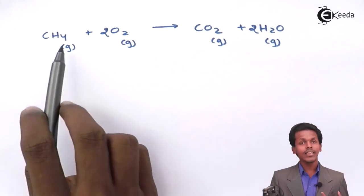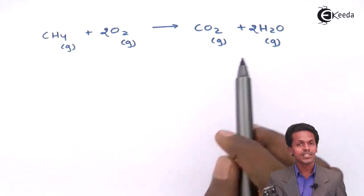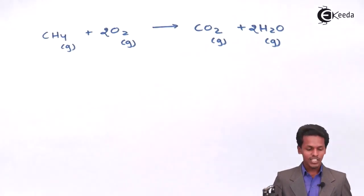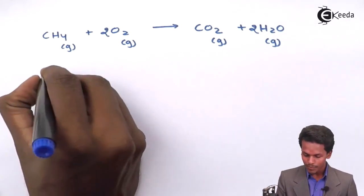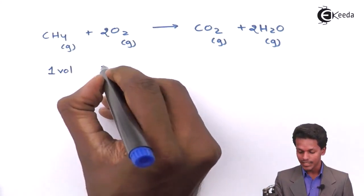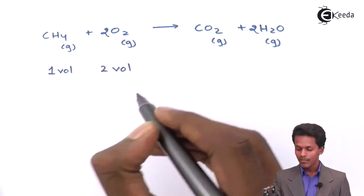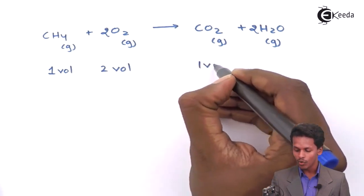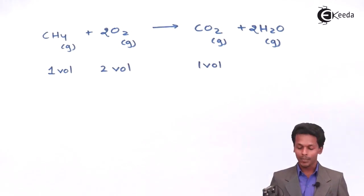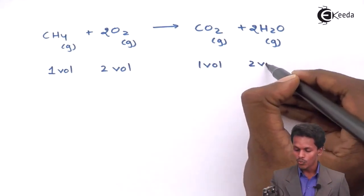So as we know that all the substances are present in a gaseous state. So I could write it as this methane is present in one volume. While that of the oxygen is present in two volumes. While that of this carbon dioxide is again present in one volume. While that of the H₂O molecules, that is water vapor, is again present in two volumes.